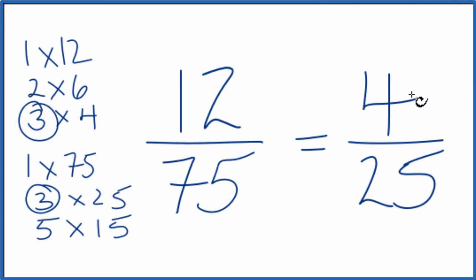So if you divide 4 by 25 and 12 by 75, you'll get the same answer. They're equivalent fractions. It's just that we've reduced 12 75ths down to 4 25ths.